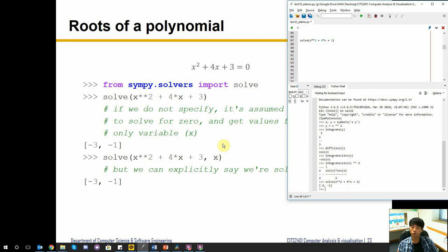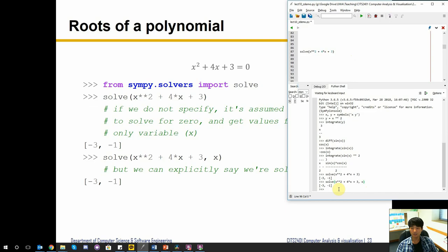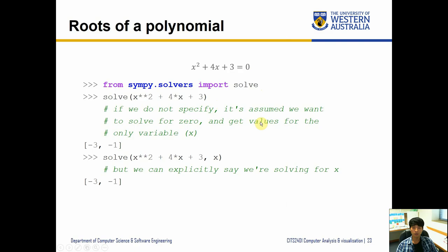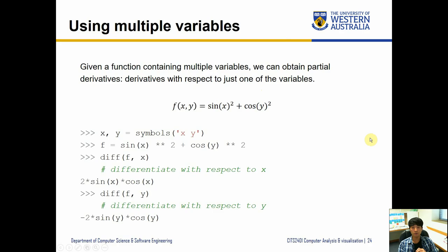If you have multiple symbols inside an equation you can specify which symbol you want to solve for. For instance, I can say solve for x — in this case the result is the same — but if I have another symbol like y, then the output will be expressed in terms of the x variable.